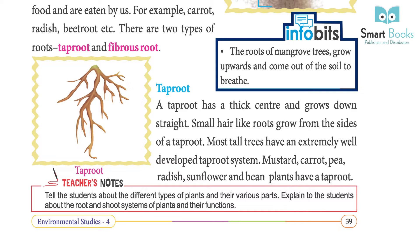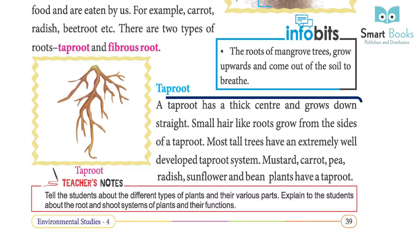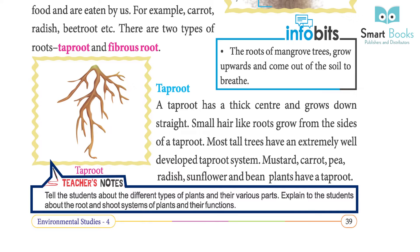A taproot has a thick center and grows straight down. Small, hair-like roots grow from the sides of a taproot. Most tall trees have an extremely well-developed taproot system. Mustard, carrot, beetroot, radish, sunflower, and bean plants have a taproot.